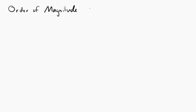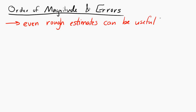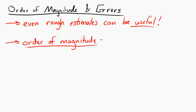Let's take a look at order of magnitude and errors. Even if we only have a rough estimate of a number, you can still make use of that information. Even if it's not perfect, it can still be useful. One way of talking about numbers, even when they're not perfect, is by using their order of magnitude. The order of magnitude of a measurement is the nearest power of 10.